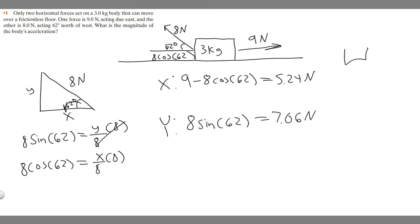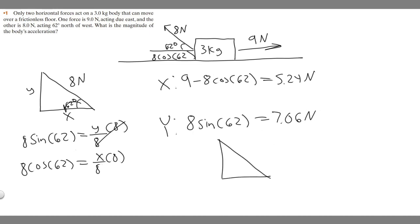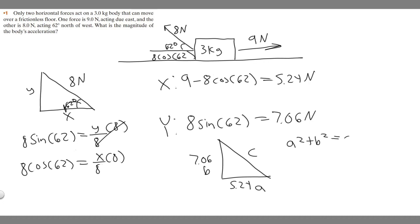So now we basically have 5.24 newtons going in the x direction and 7.06 newtons upward. We want to combine them into one resultant force. We do this using the Pythagorean theorem — imagine it like a triangle where 7.06 is side A, 5.24 is side B, and we're finding the hypotenuse C. A squared plus B squared equals C squared, so C equals the square root of A squared plus B squared.